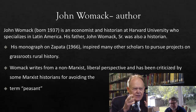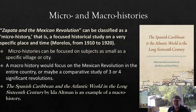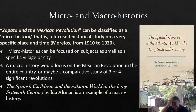Womack writes from a non-Marxist, liberal perspective and has been criticized by some Marxist historians for avoiding the term 'peasant' in his study. I want to mention something about micro and macro histories. This book, Zapata and the Mexican Revolution, can be classified as a micro history — a focused historical study on a very specific place and time. In this case, the time is 1910 to 1920 and the place is the state of Morelos. He's not talking about Pancho Villa or the overall Mexican Revolution; he's only focused on the people of Morelos during this period.